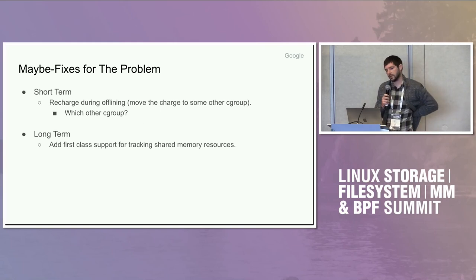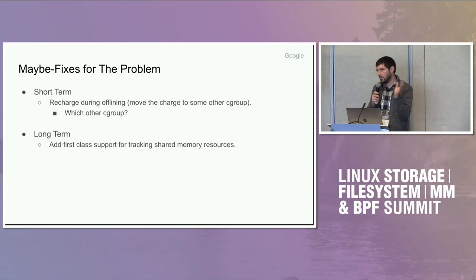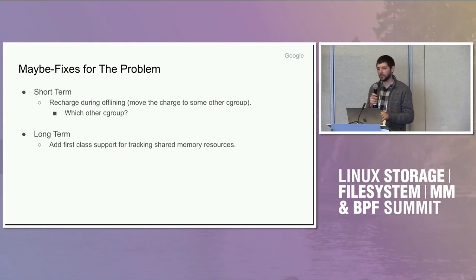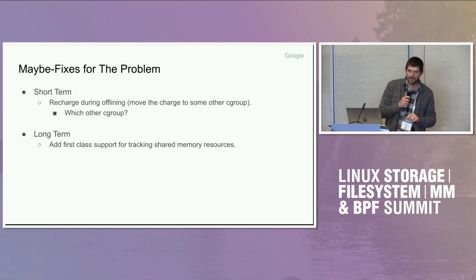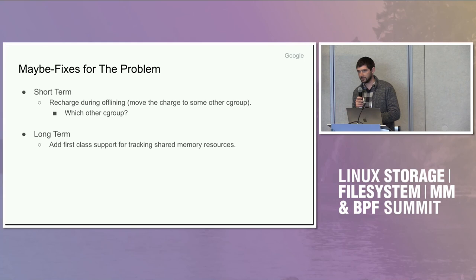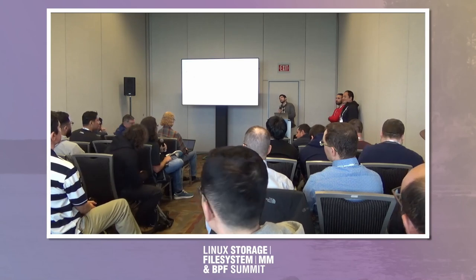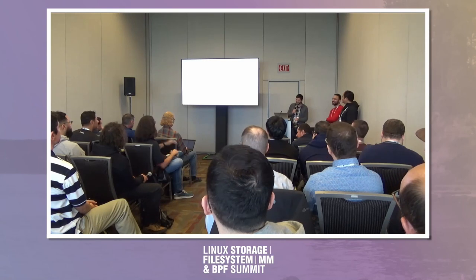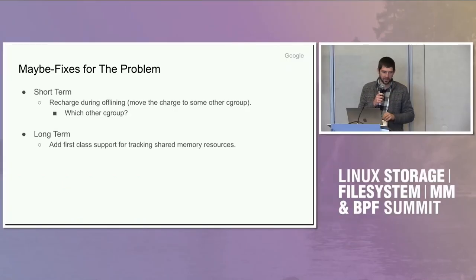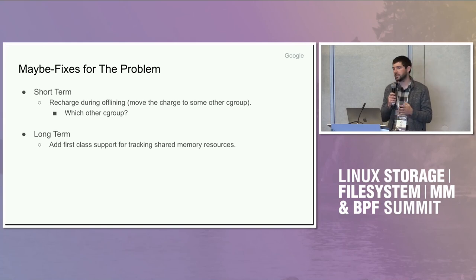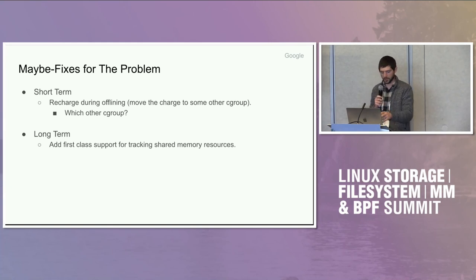I've been brainstorming some ways to address this with Chris and Yosri. One idea is instead of reparenting the charge — just moving it up the hierarchy — move it to some other cgroup that has a valid claim to the memory. In terms of accounting correctly, that's a little bit better, but which other cgroup? That's kind of hard to find. The first one that accesses it after its current cgroup becomes a zombie. And a longer-term idea is that instead of associating a page with just one memcg, find a way to associate a page with multiple memcgs. That's the idea under the longer-term solution here.